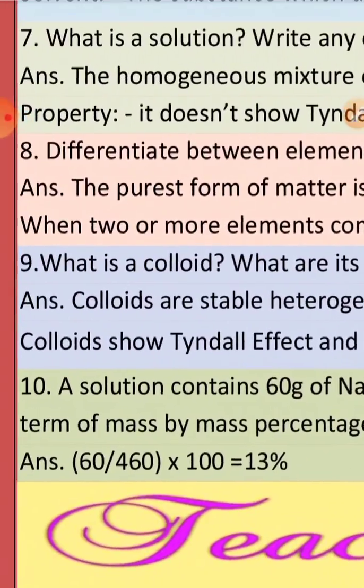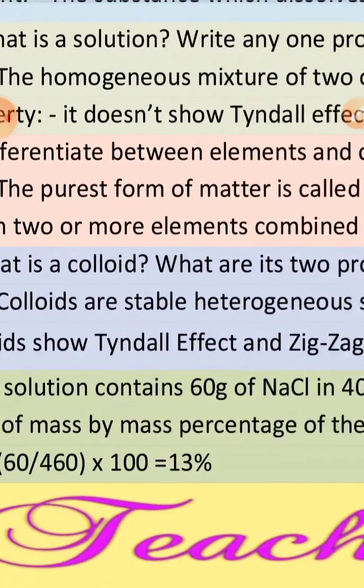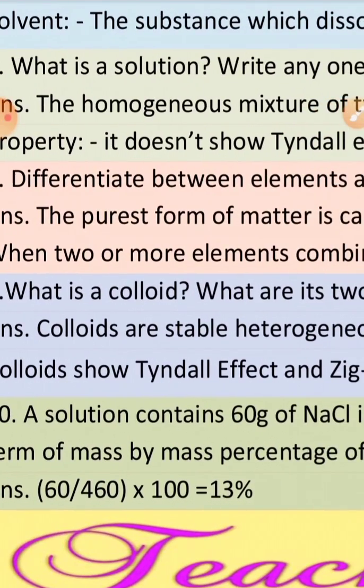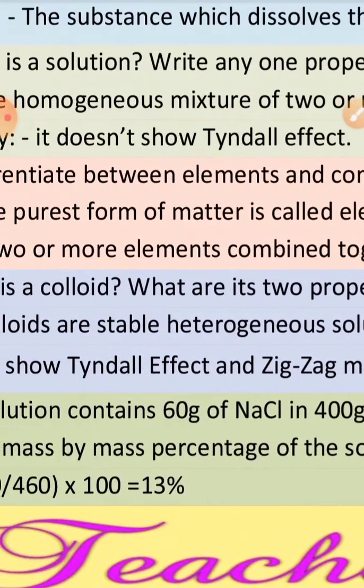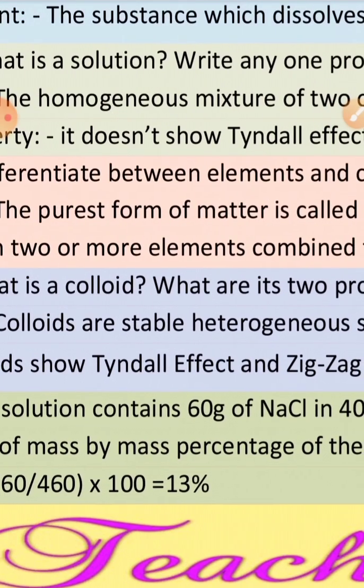Question number eight: Differentiate between elements and compound. Very easy question but important also. The purest form of matter is called element, or the matter which is made of one type of particles only.